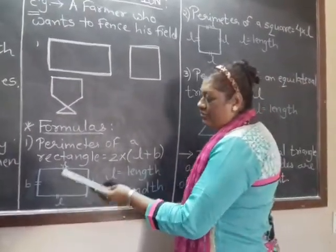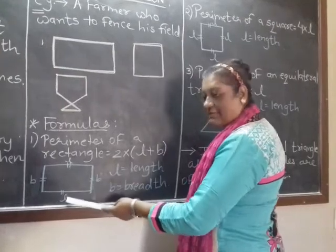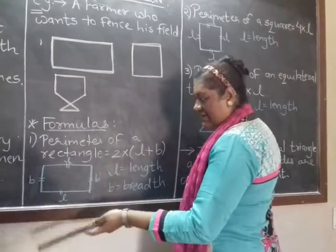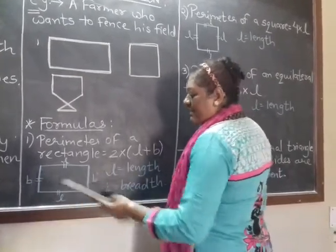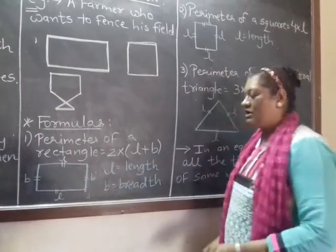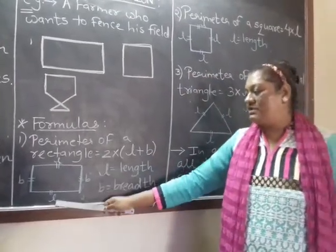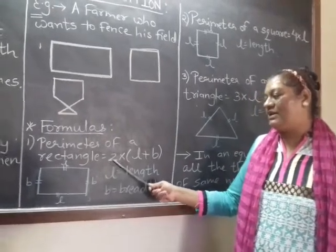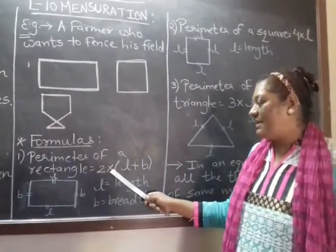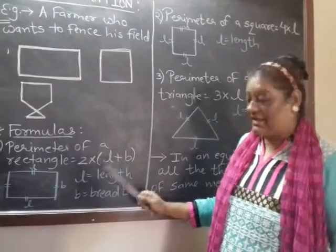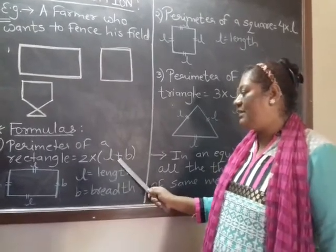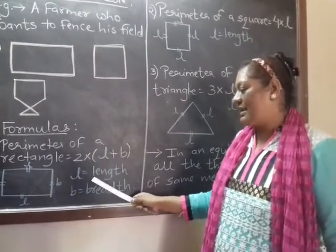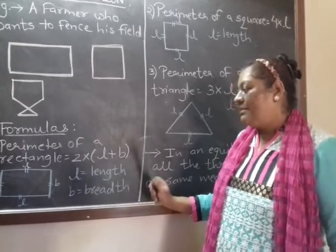You know that in rectangle, two lengths, that is opposite lengths are of same size or same measurement and breadths are of same measurement. So here two times length is repeated, two times breadth is repeated. So the formula is very easy: 2 into the bracket, I repeat, 2 into the bracket L plus B. L is nothing but length. B is breadth.